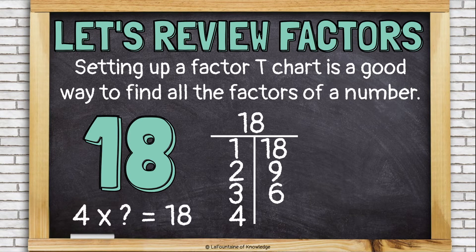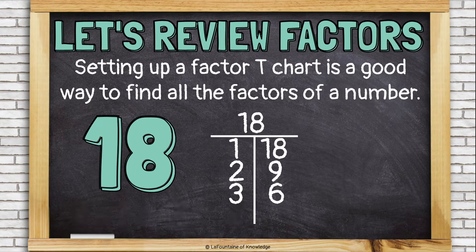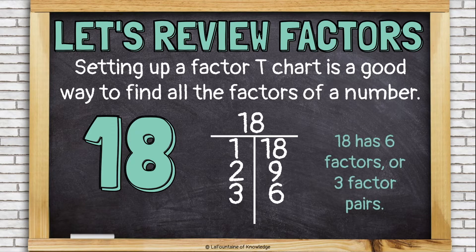What about 4? No, I can't multiply 4 by anything to get 18. What about 5? No, 5 is not a factor of 18 either. What about 6? Oh, I already have 6 on my factor T-chart. That's how I know I have all of the factors of 18. 18 has 6 factors or 3 factor pairs.